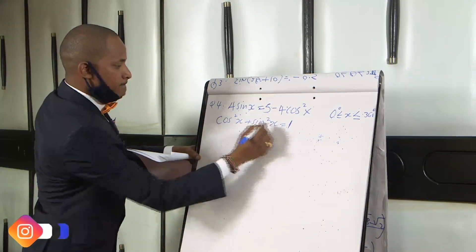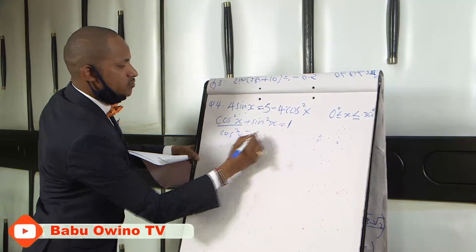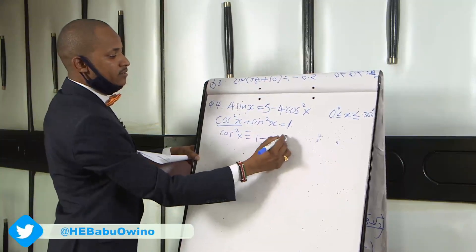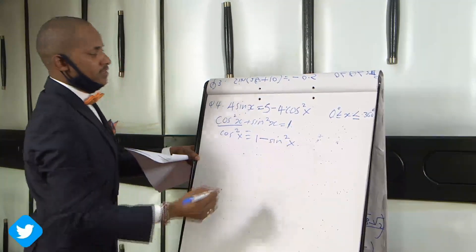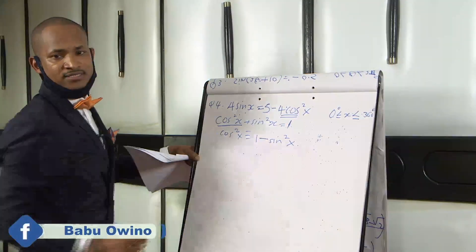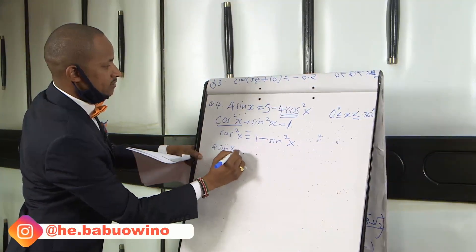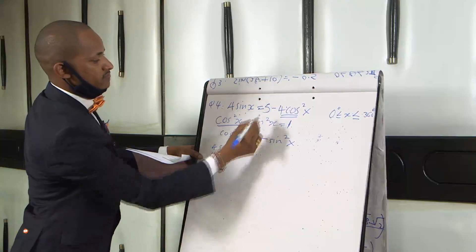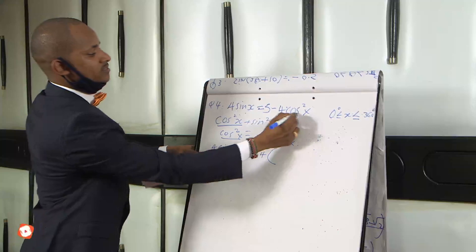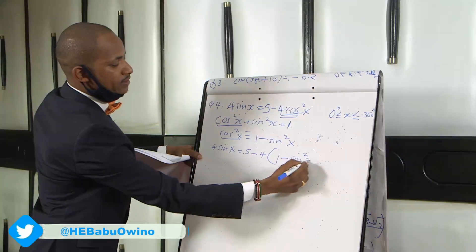Therefore, from cos²x + sin²x = 1, we get cos²x = 1 − sin²x. We now replace cos²x in our initial equation, giving us 4 sin x = 5 − 4(1 − sin²x).